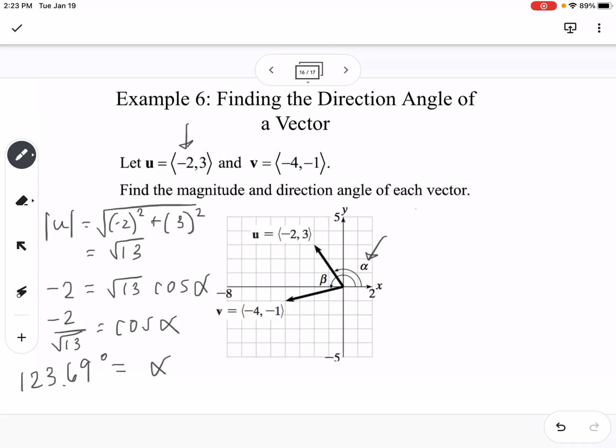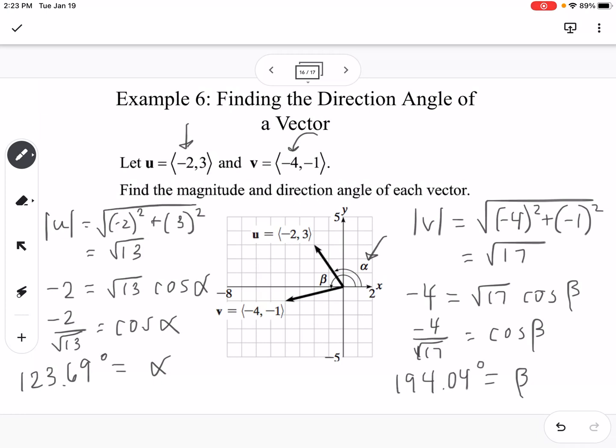Now doing the same thing for v. The magnitude would be √((-4)² + (-1)²) = √17. The x-component of v is -4 = √17 cos β. Dividing, -4/√17 = cos β. Taking the inverse cosine, I get β = 194.04°. Cosine is going to be nicer to use than sine, because sine isn't going to help you find the obtuse angles like cosine does. So I would recommend using the x part of your component and using cosine.